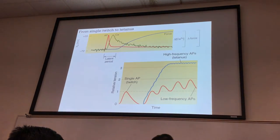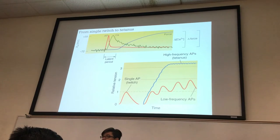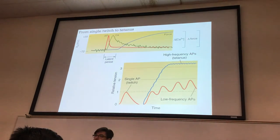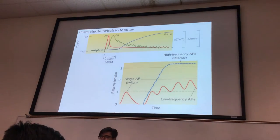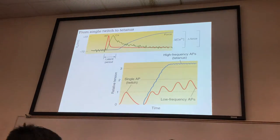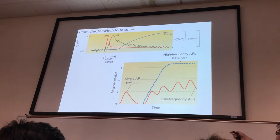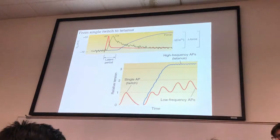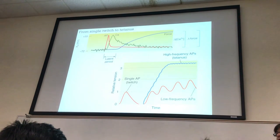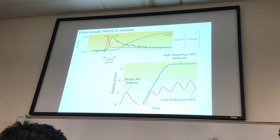Tetanus — like bacterial tetanus — forces your muscles to lock. From a bacteria, whereas at extremely high frequencies biologically you can get this, but it's difficult to think of an example of where this naturally happens.